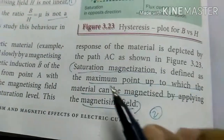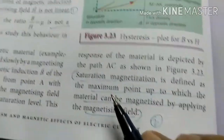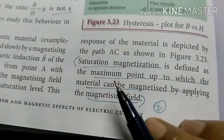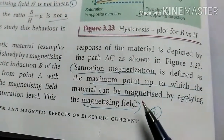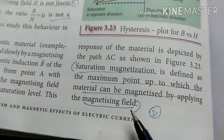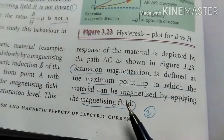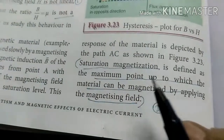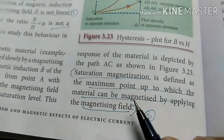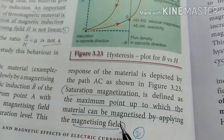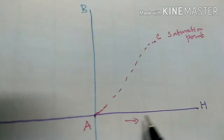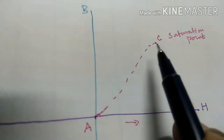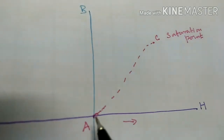Saturation magnetization is the maximum point at which the material can be magnetized by applying the magnetizing field. Now, when the magnetizing field decreases, it does not retrace the path along C.